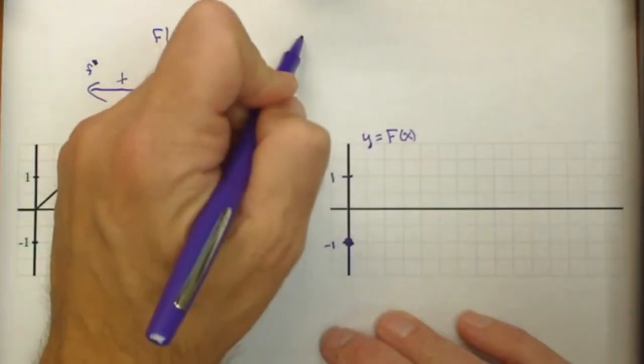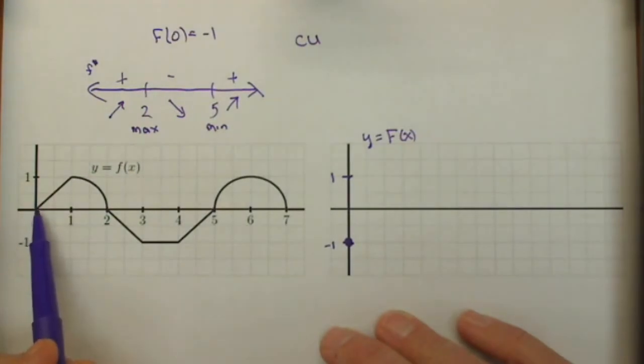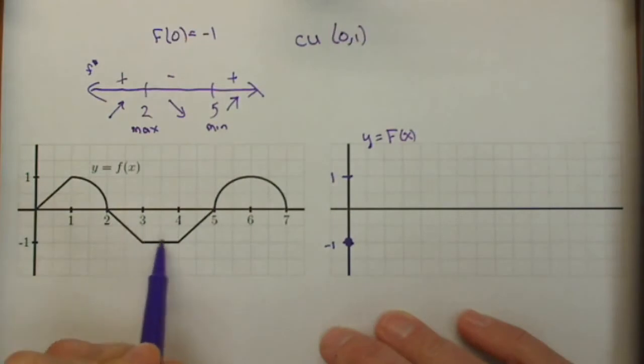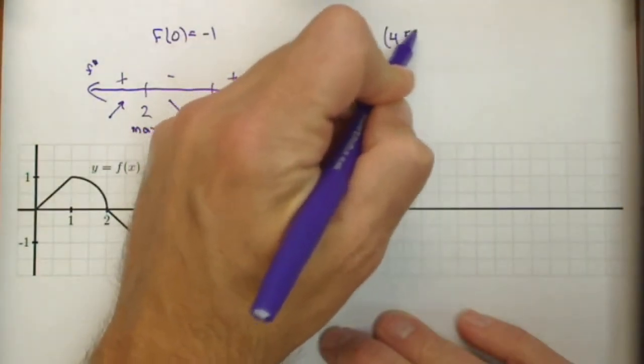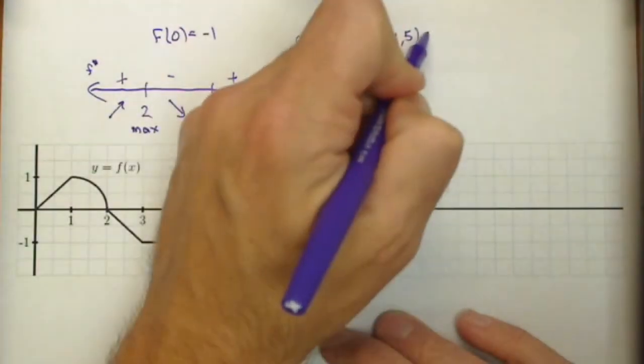Let's talk about the concavity, concave up. Well, that's where the rate of change is increasing. So from 0 to 1, and it's not increasing again until 4 to 5. We have one more spot.